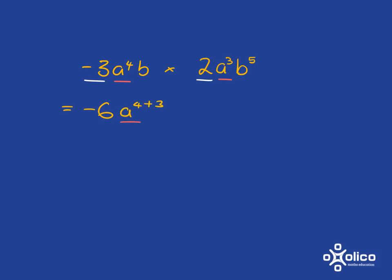And then we move on after that to our b's. And in this case, we've got a b sitting over here, which has got no exponent. But we know that that just means it's b to the power of 1. So we can apply the exponent rule here and we'll get b to the 1 plus 5.